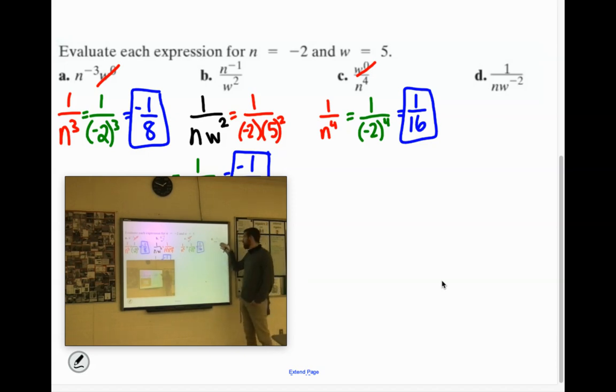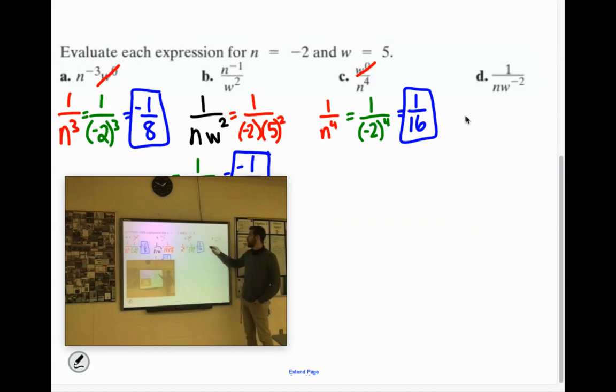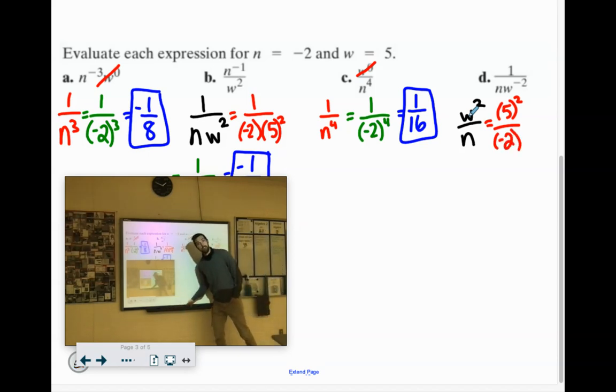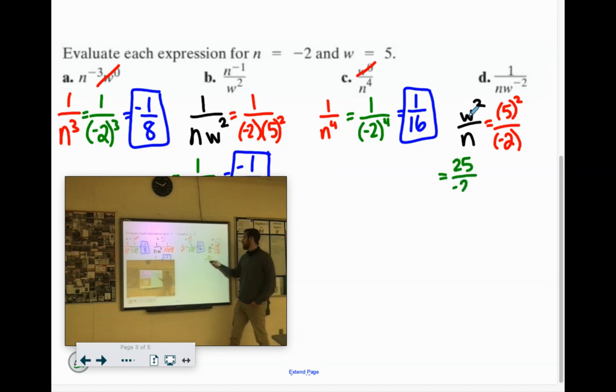N is fine. The W to the negative second has a negative exponent, so that's going up top. So it would be W squared over N. So W is 5, 5 squared. N is negative 2. Now 5 squared, 5 times 5 is 25 over negative 2. You can't simplify that at all.